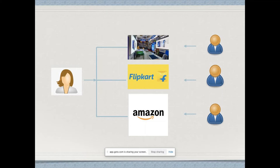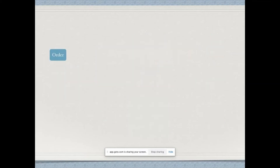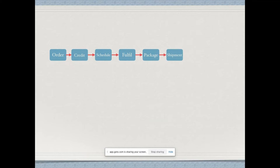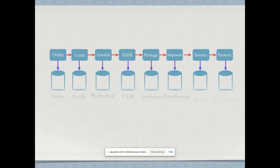This is the outside picture we all know, but internally there are a lot of systems that have to be managed. If you look at the lifecycle, you'll see a series of steps: order, credit check, schedule, fulfill, package, shipment, invoice, and payment. These are managed in different systems.